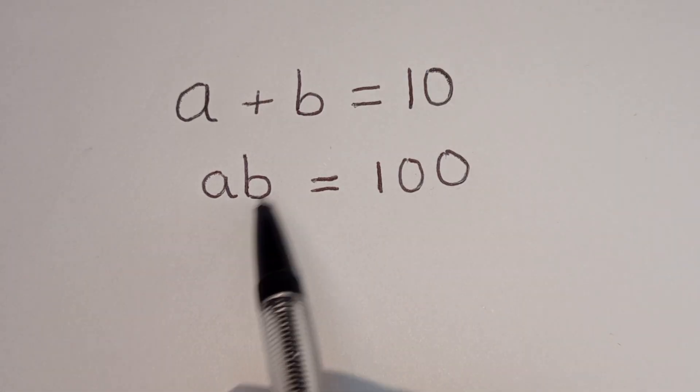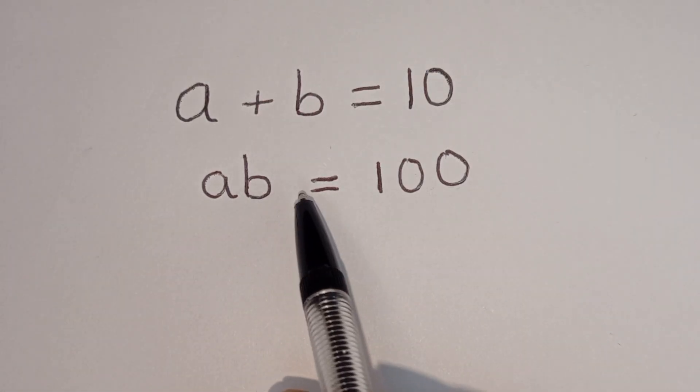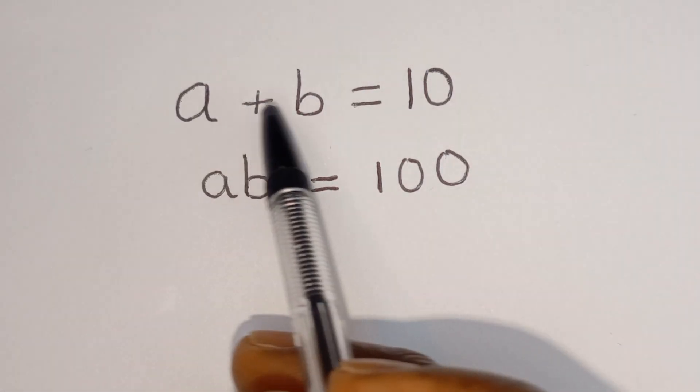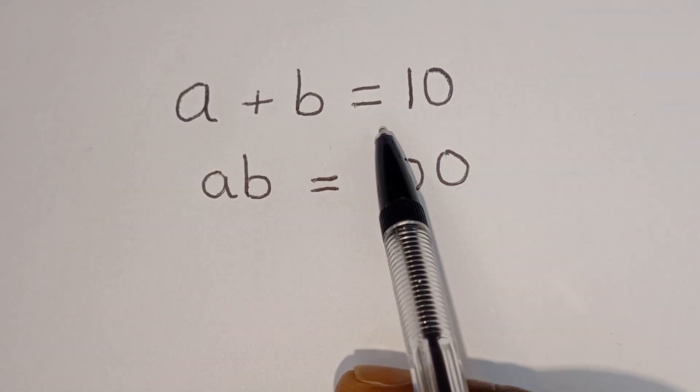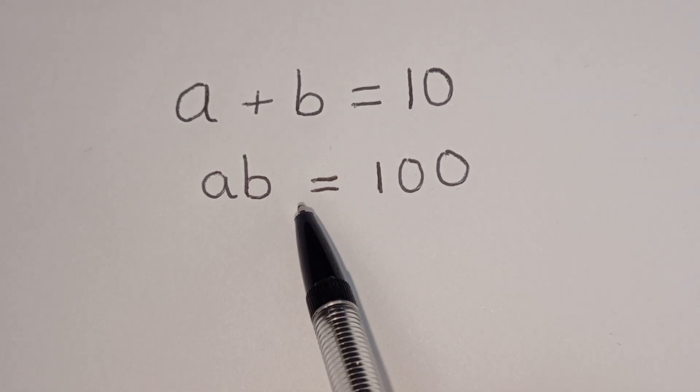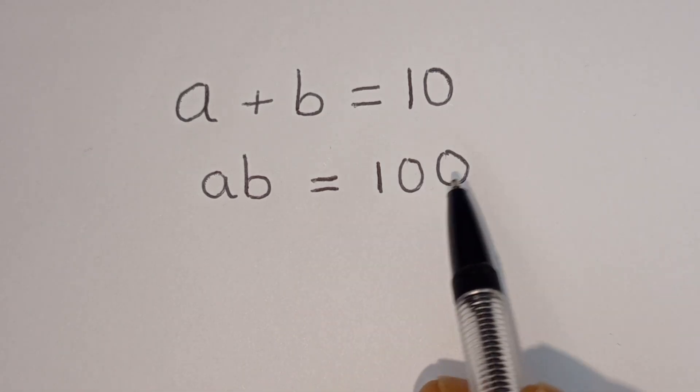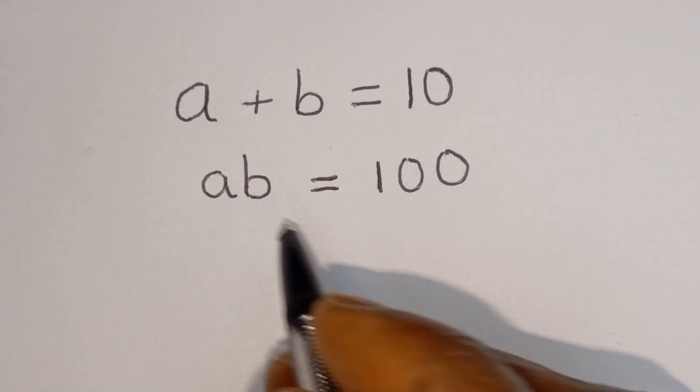Hello. How to solve for a and b in this equation: a plus b is equal to 10, and a times b is equal to 100.